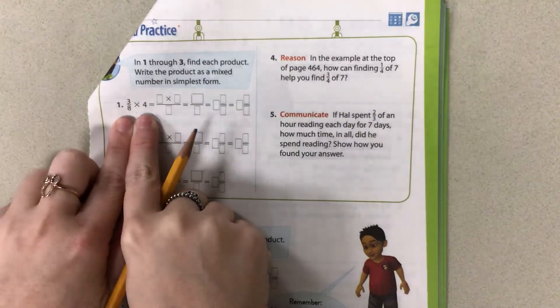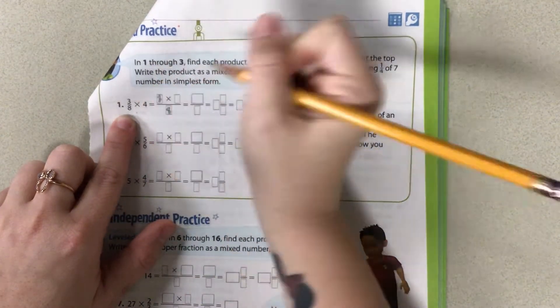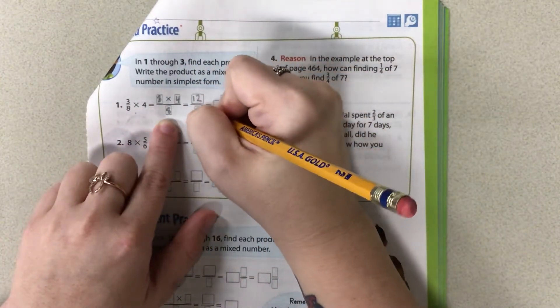So 3 eighths times 4. So we're going to keep our 3 eighths here and we're going to times it by 4. 3 times 4 is 12. Keep my 8.